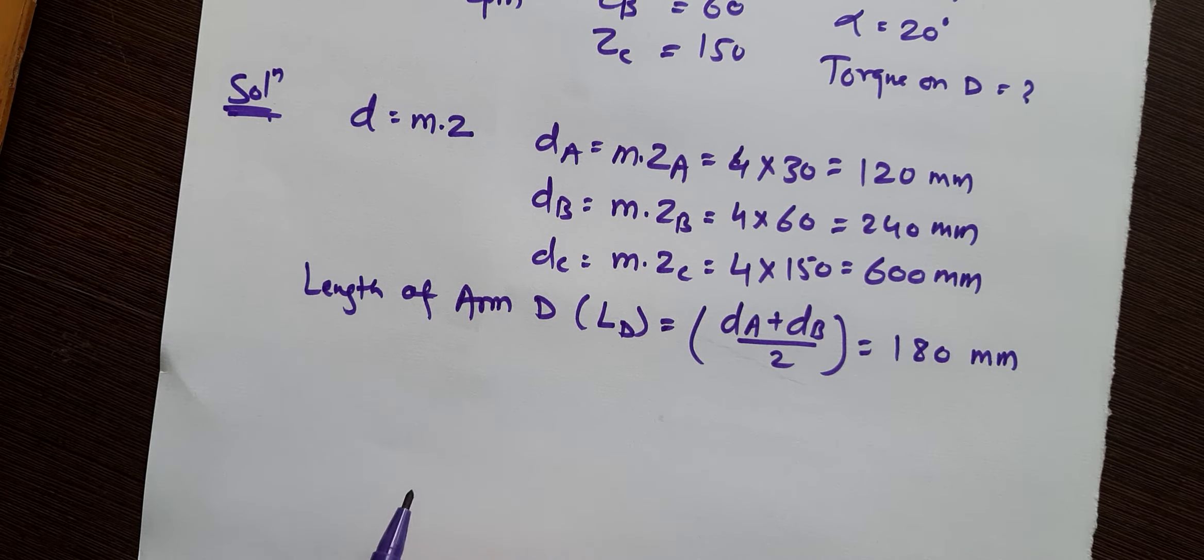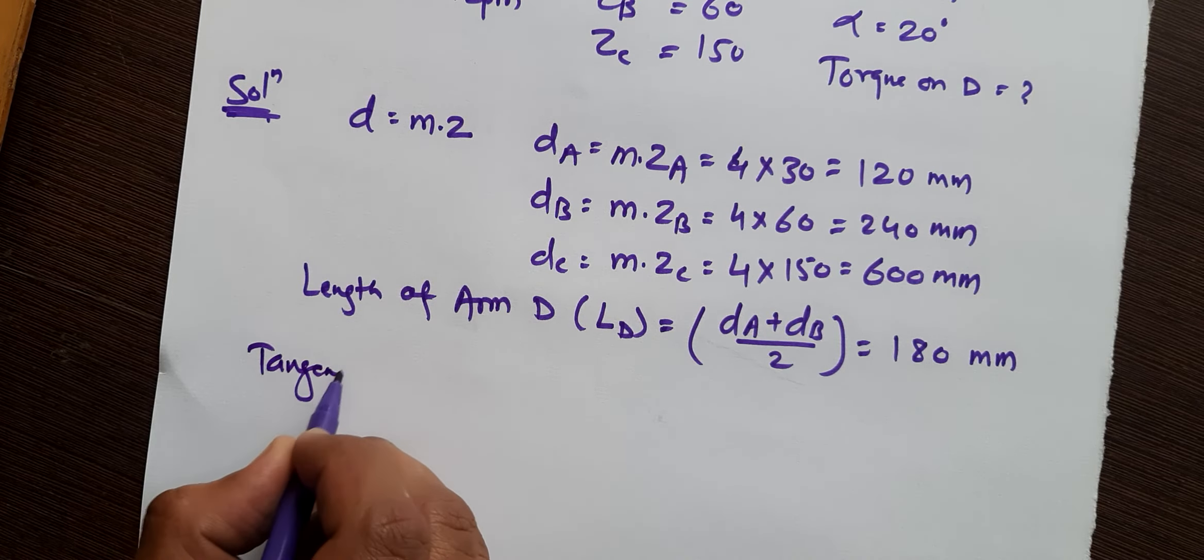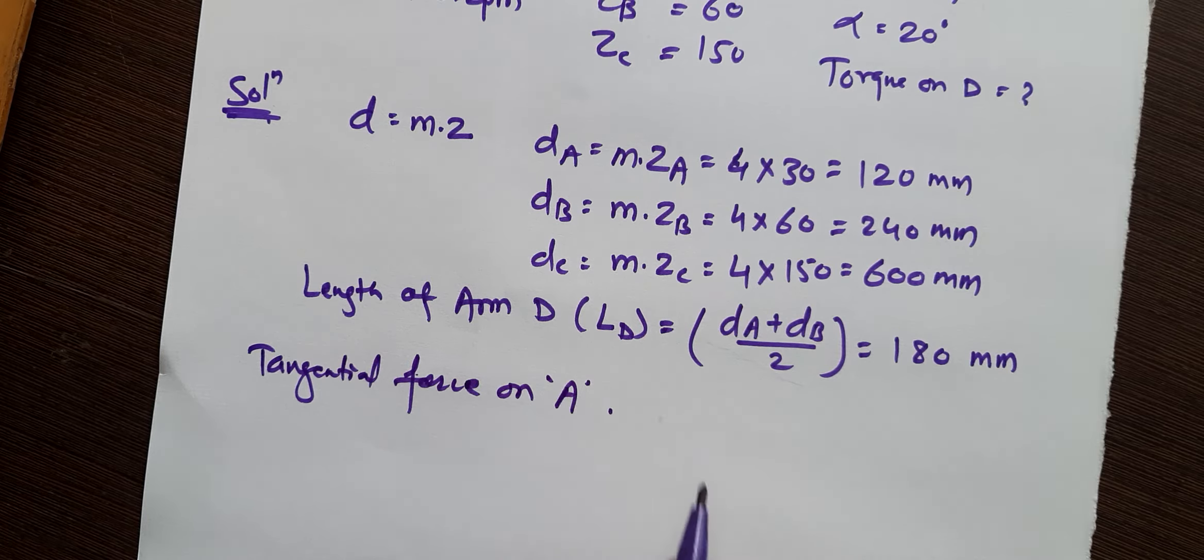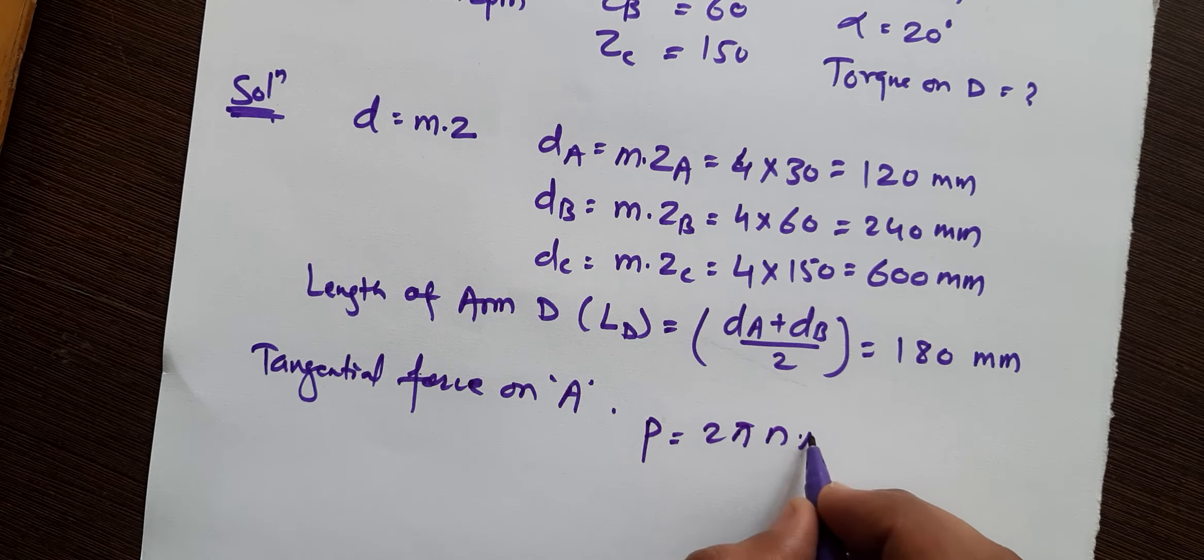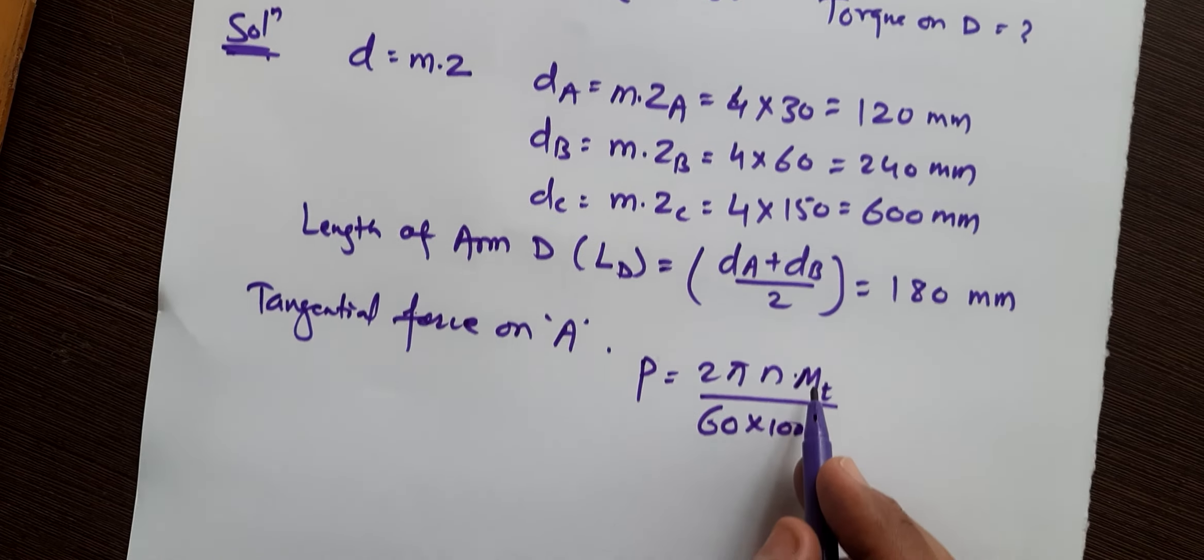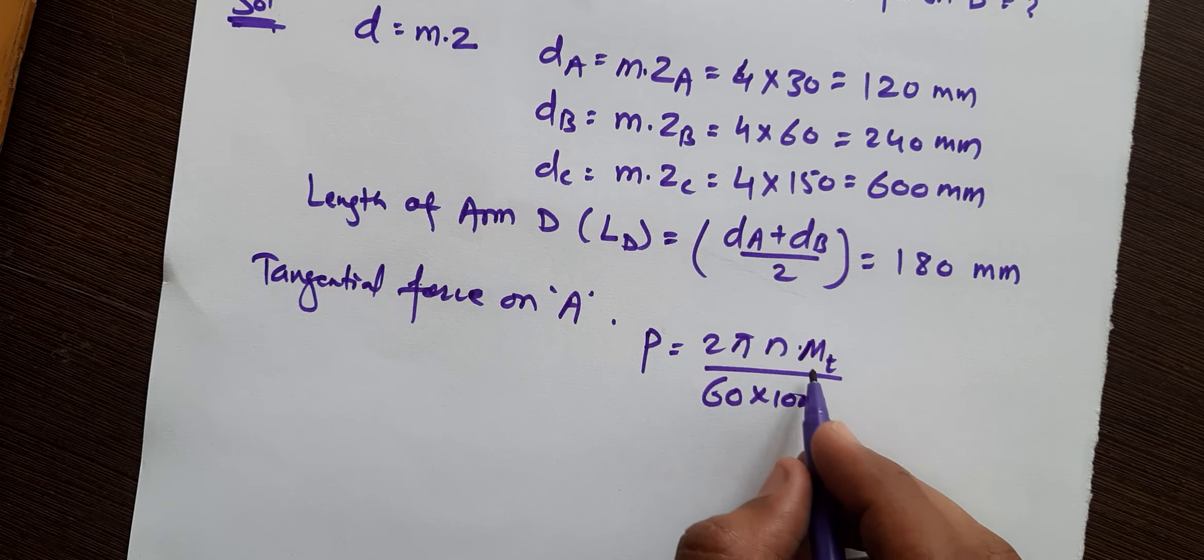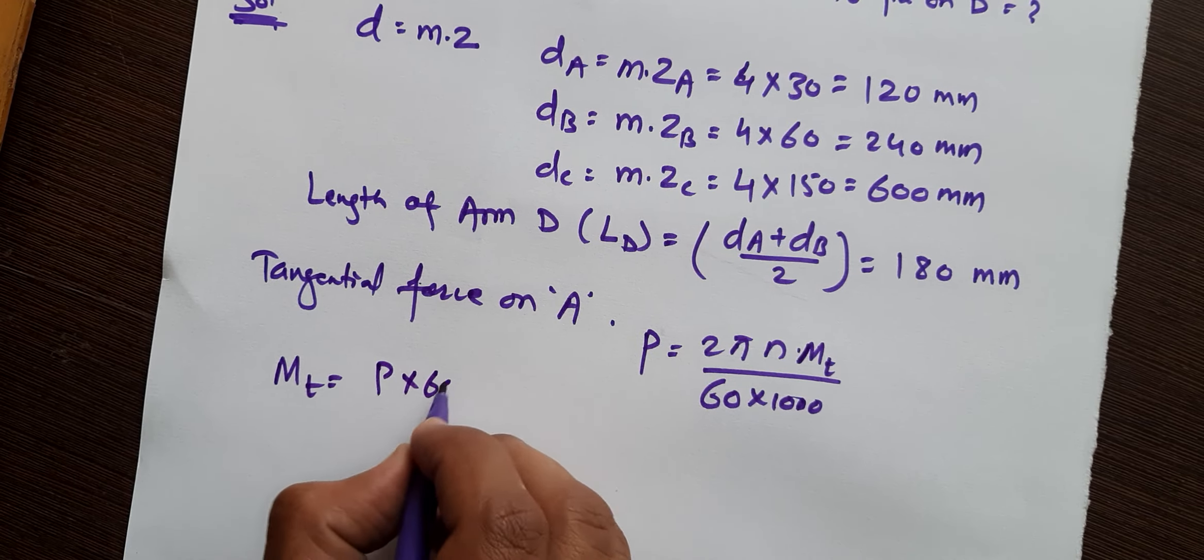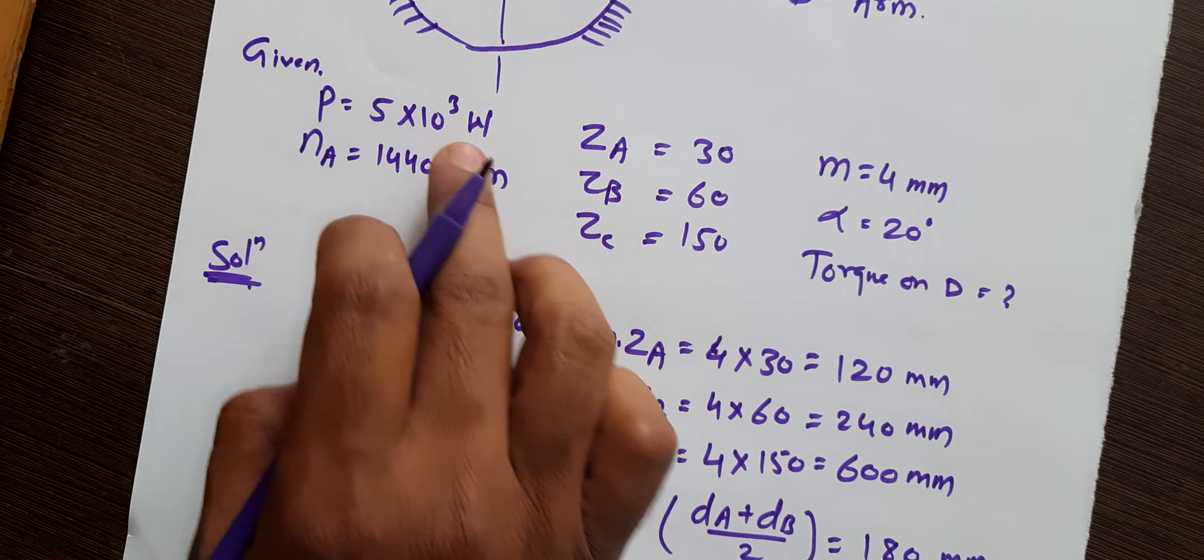Okay, now we will find the tangential force acting on gear A. So by using the formula of power = 2π × MT/(60 × 1000), from this we will first calculate MT and then from MT torque we will calculate tangential force. So from this formula we can write MT = (Power × 60 × 1000)/(2πn). Now power is given as 5×10³, so 5×10³ × 60 × 1000 divided by 2π × n.